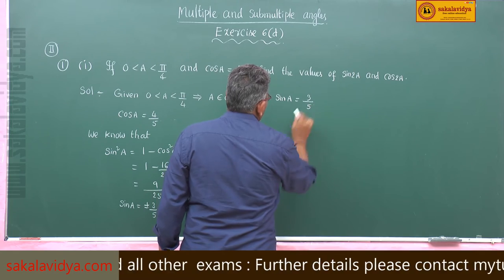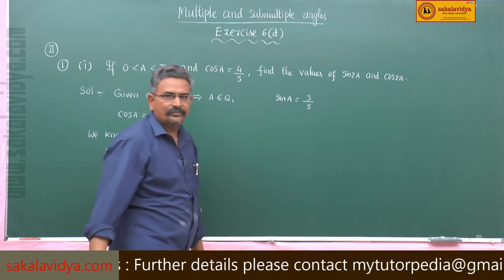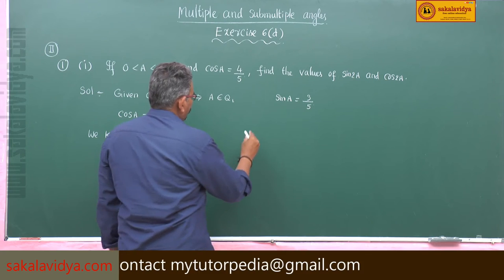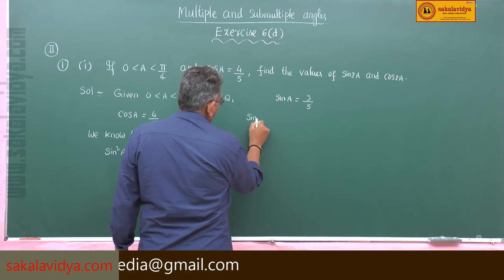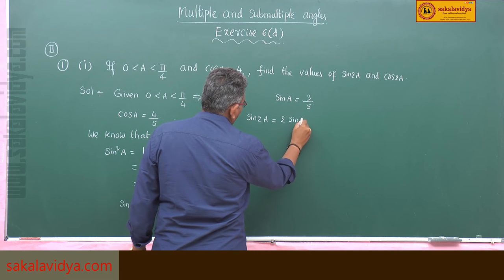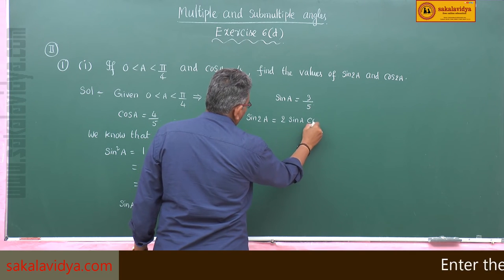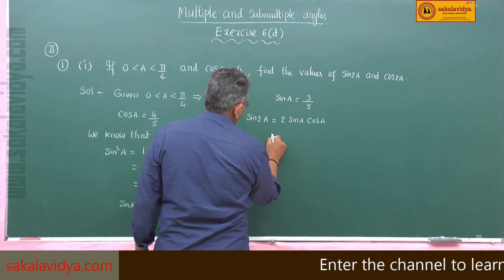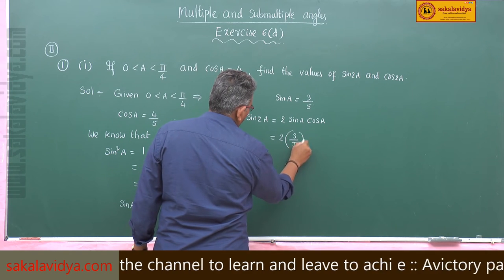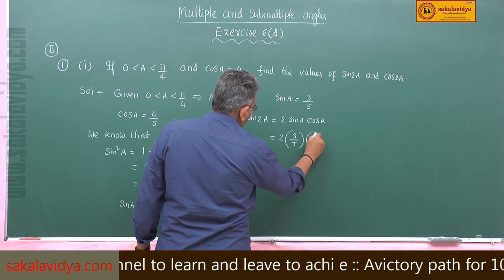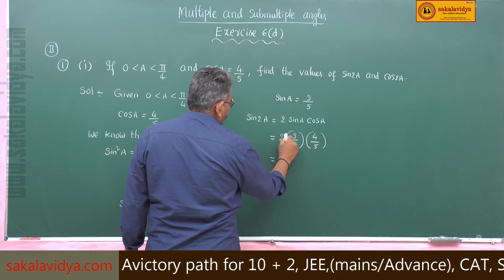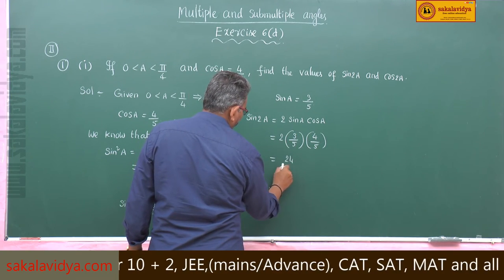Now let us find these two values. sin2A = 2 sinA cosA = 2 × (3/5) × (4/5) = 24/25.